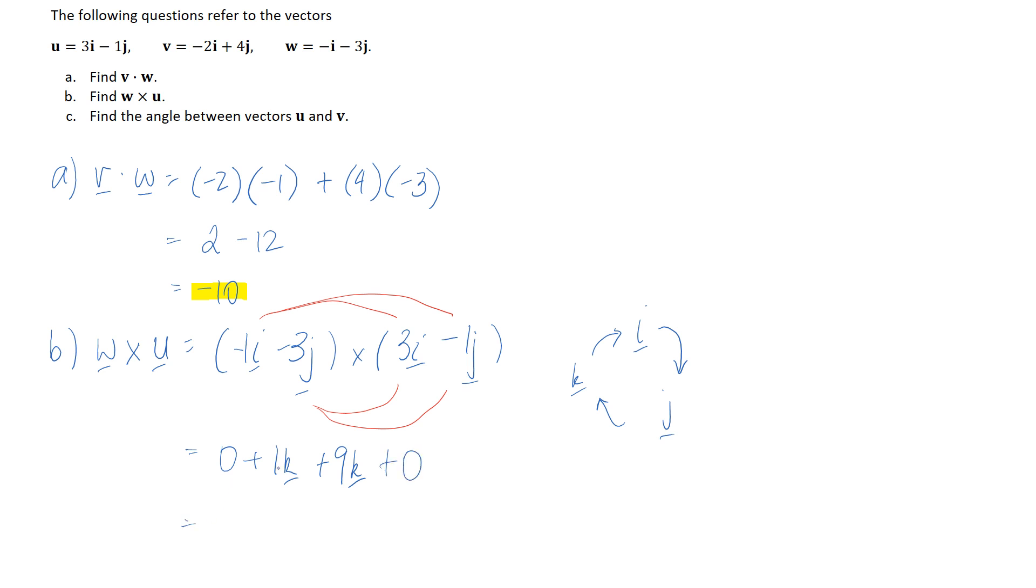So overall we can simplify this to be just 10k on its own and I'll just make the note as well that we can see this is a vector because it's got a k associated with it that is why that cross products are sometimes called vector products because what falls out is a vector.